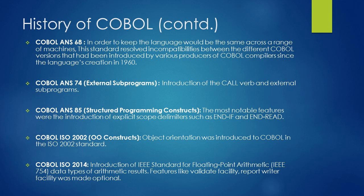The fourth and fifth standards were introduced by ISO in 2002 and 2014. In the ISO 2002 standard, object orientation was introduced. In the ISO 2014 standard, the IEEE standard for floating point arithmetic was introduced. In this standard, features like the validate facility and report writer facility were made optional.